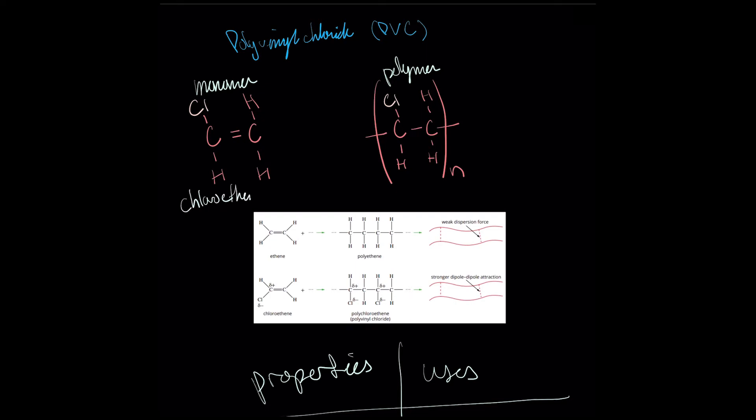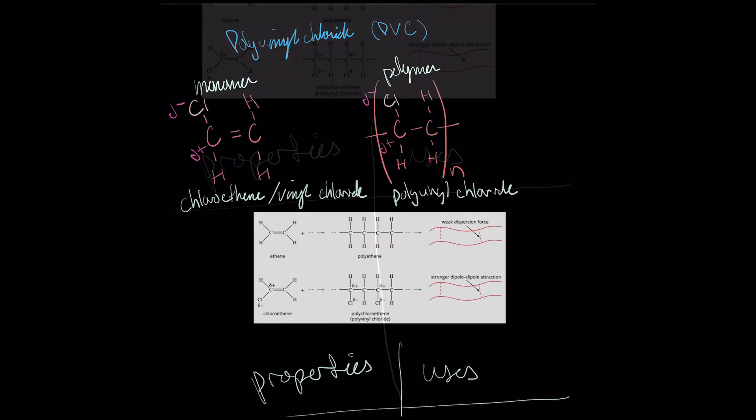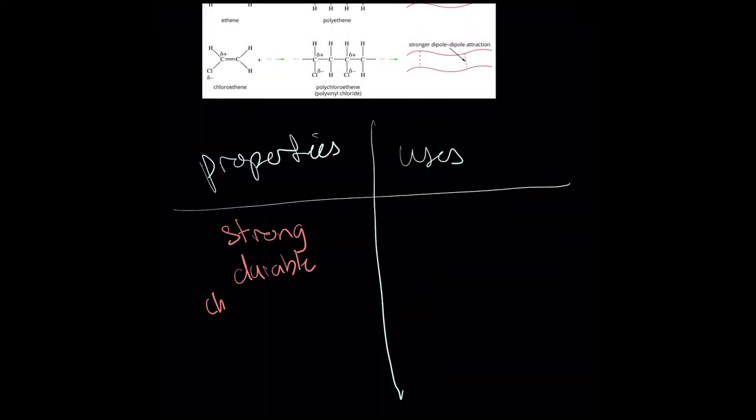Due to the electronegativity of the chlorine atom, PVC has dipoles all the way down its long molecules. This means that the forces holding the chains to each other are now dipole-dipole forces, which are significantly stronger than the dispersion forces holding polyethylene molecules to each other.